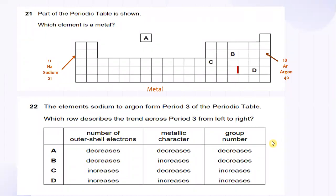Question number 21. Part of the periodic table is shown. Which element is a metal? So on the left hand side, this is the sodium. And A is actually representing hydrogen. And from the right hand side is the argon. And this whole thing is a metal.